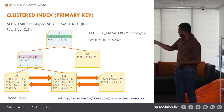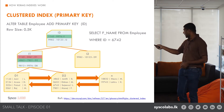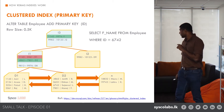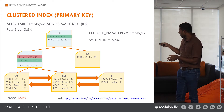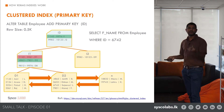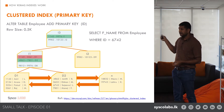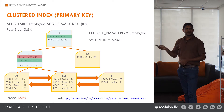You might notice that regardless of which ID you are looking for, it takes approximately the same number of lookups. This improves performance significantly. The drawback is that if you add more and more data, it will add more and more index files, and the depth of the index will grow higher.